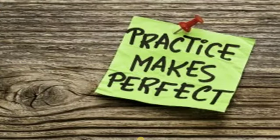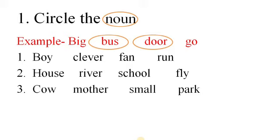Now put out your notebook and start writing — it's practice time. Question number 1: Circle the noun. Example — big, bus, door, go. The nouns are bus and door. Question 1: boy, clever, fan, run. Number 2: house, river, school, fly. Question number 3: cow, mother, small, park.